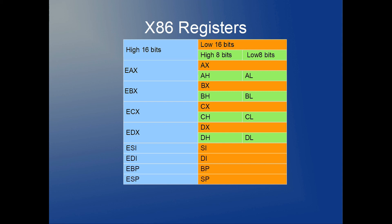Similarly, EBX, ECX, and EDX can each be subdivided into high and low 16-bit halves, and the low 16 bits can in turn be subdivided into two 8-bit sub-registers. The ESI, EDI, EBP, and ESP registers are only subdivided once into a low 16-bit sub-register: SI, DI, BP, and SP respectively.